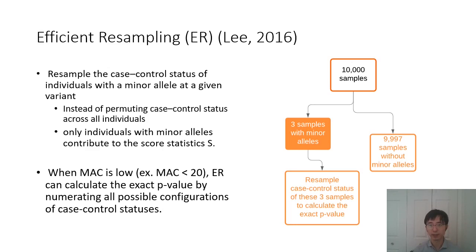For example, if we have 10,000 samples in total, and only three samples have this particular minor allele, we can only resample case-control status among these three samples to calculate the exact p-value, instead of permuting all case-control status across all 10,000 samples.